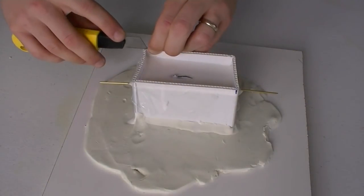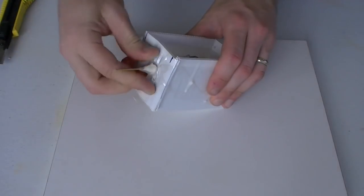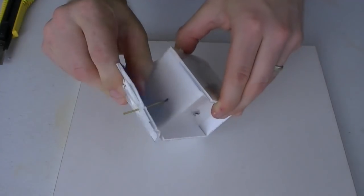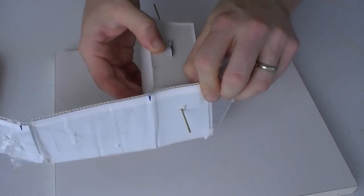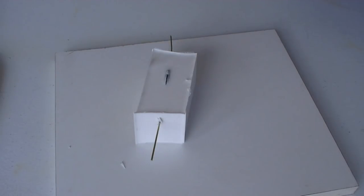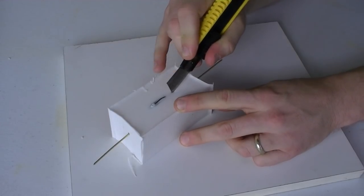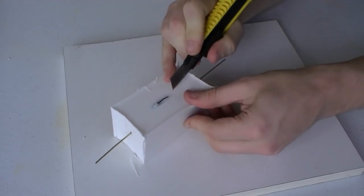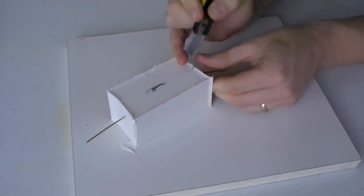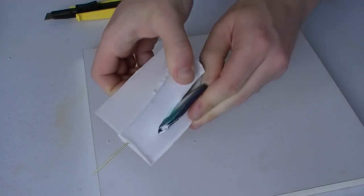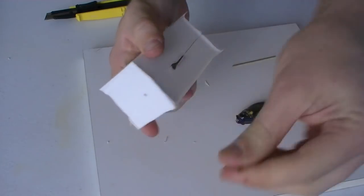Leave the silicone to set thoroughly then cut the mould box away from the new mould. With a sharp knife, carefully score a slit from the pouring hole to one of the support rods. You will now be able to remove the original fishing lure. The mould is now complete and ready for casting with soft rubber or hard resin.